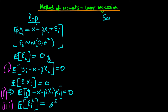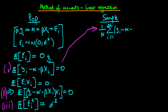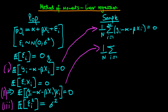Now let's generate the sample analogs of each population moment condition. For the first condition, we replace the expectation with the sample mean, giving us one over n times the sum from i equals one to n of (yᵢ minus alpha minus beta xᵢ) equals zero. For the second condition, we again replace the expectation with the sample mean, giving one over n times the sum from i equals one to n of xᵢ times (yᵢ minus alpha minus beta xᵢ) equals zero.